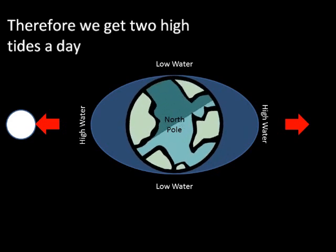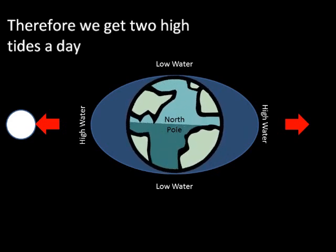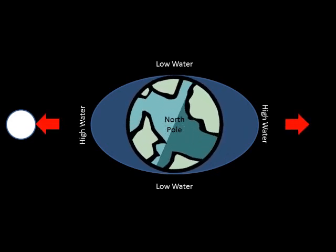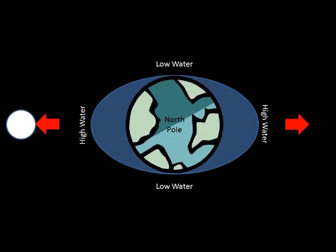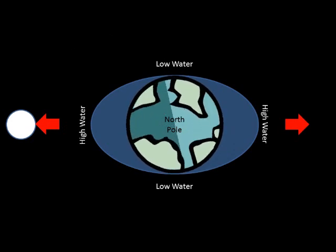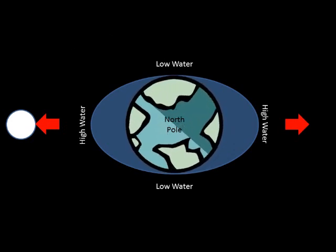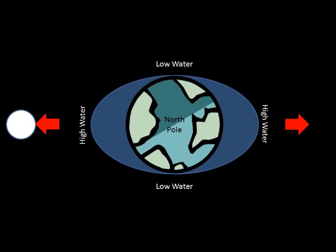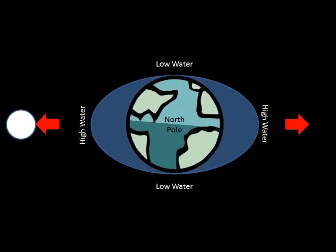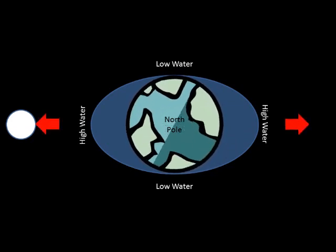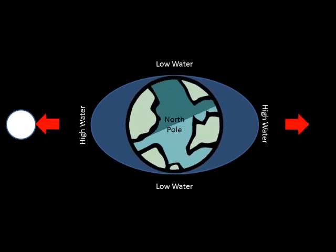We therefore get two high tides in a day — one as the UK passes through the bulge on the side of the Earth where the moon is, and the second high tide as we pass through the bulge on the opposite side.